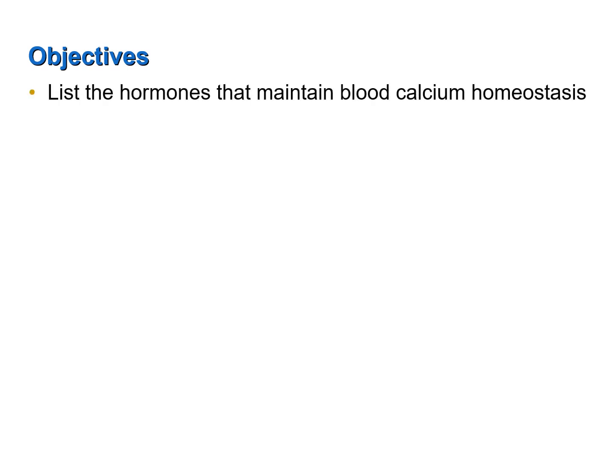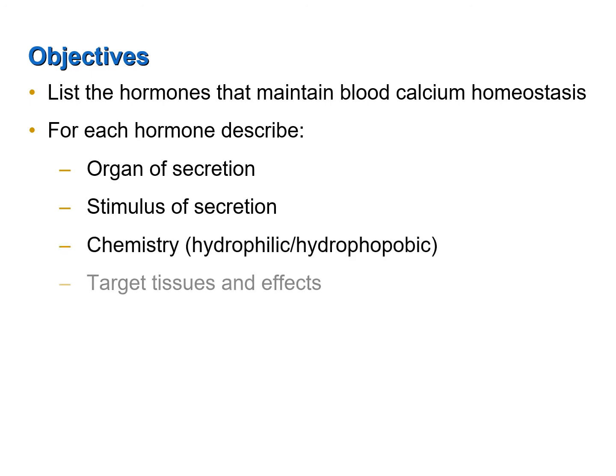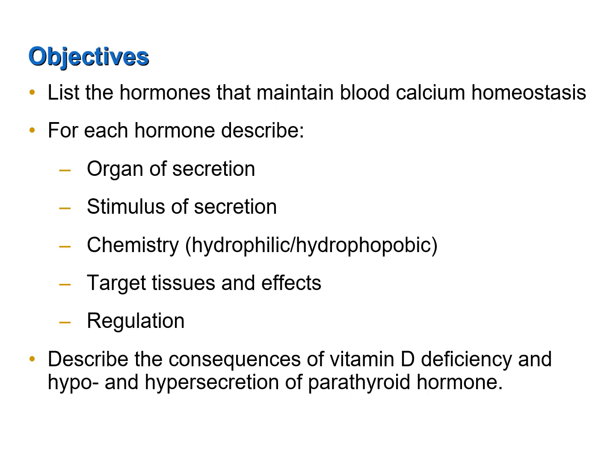To review the objectives of this screencast: list the hormones that maintain blood calcium homeostasis; for each hormone describe the organ of secretion, the stimulus of secretion, the chemistry (hydrophobic or hydrophilic), target tissues and effects, and regulation of the hormone. Also describe the consequences of vitamin D deficiency and hypo and hyper secretion of parathyroid hormone.